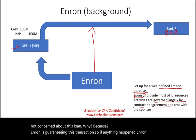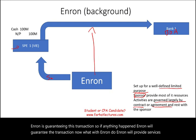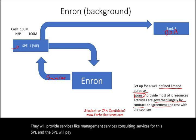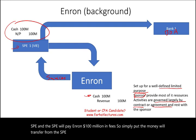Enron would then provide services — management services, consulting services — for this SPE, and the SPE would pay Enron $100 million in fees. Simply put, the money would transfer from the SPE books to Enron's books: Enron would debit cash $100 million, credit revenue $100 million.